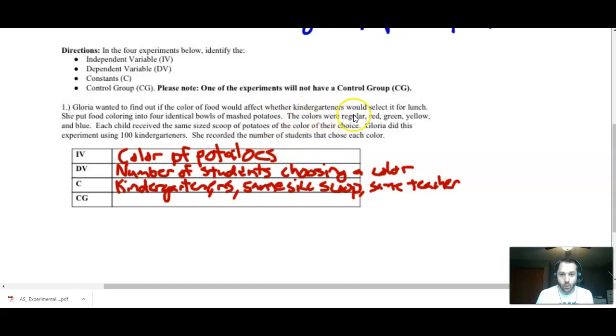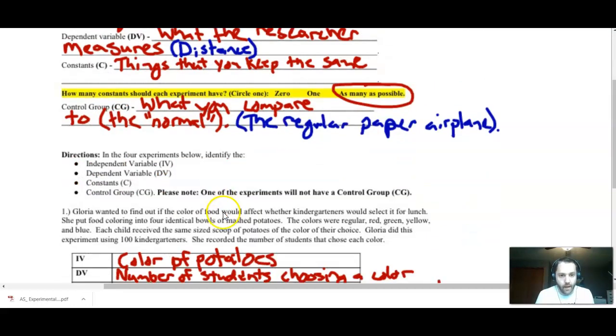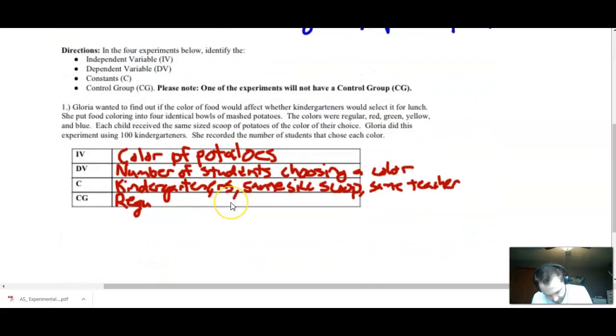Control group. Right in here, it says there were regular potatoes. We can just simply say that our control group, because if I go back to the definition control group, what you compare to, or the normal. So in this case, that's just going to be regular potatoes. And there we go. We kind of broke down that experiment.